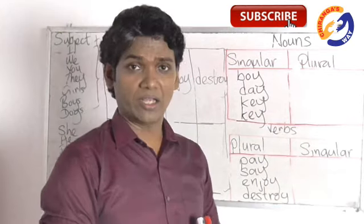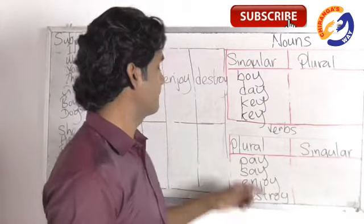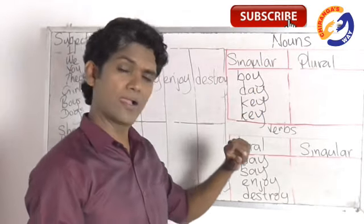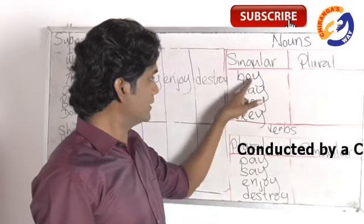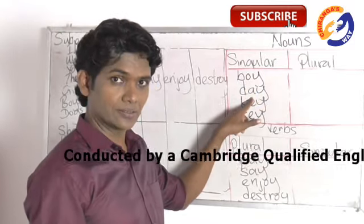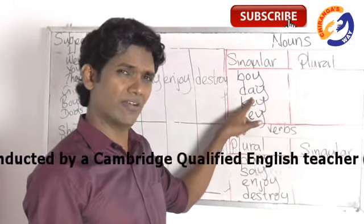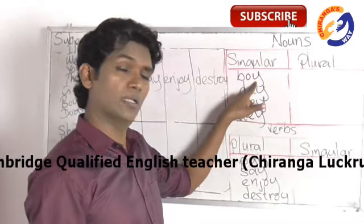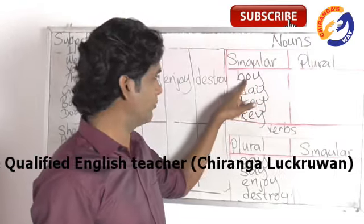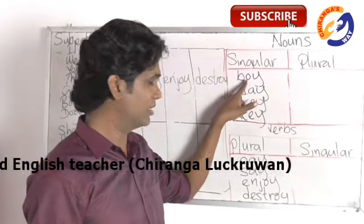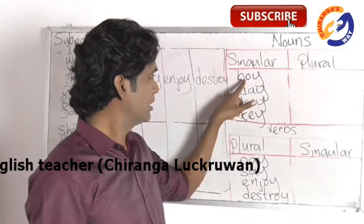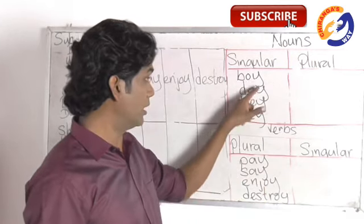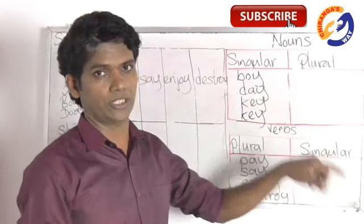Here we are going to talk about words ending in the letter Y where the letter before Y is a vowel. In the last video we discussed words ending in Y with a consonant before it. Today we are discussing words ending in Y with a vowel before it.